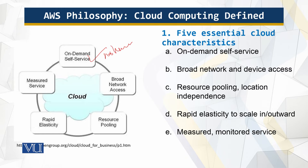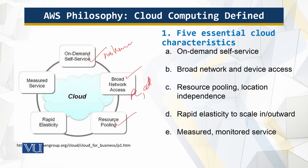Broad network access: capabilities are available over the network and accessed via standard mechanisms on thin or thick platforms — mobile phones, tablets, laptops, workstations, PCs. Resource pooling: the provider's computing resources are pooled to serve multiple consumers using a multi-tenant model with different physical and virtual resources.